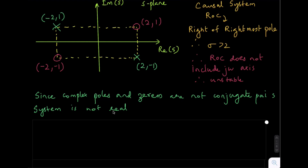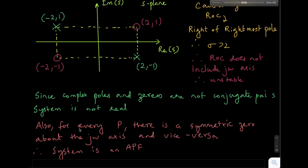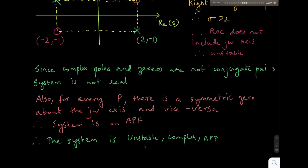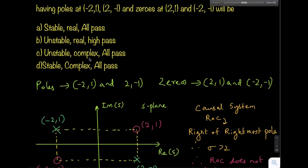For every pole there is a symmetric zero about the j-omega axis, and vice versa — for every zero there is also a symmetric pole about the j-omega axis. This is a property of an all-pass filter. Therefore this system is also an all-pass filter. The combined answer is: unstable (ROC does not include j-omega axis), complex (poles and zeros not in conjugate pairs), and all-pass filter — so option C is the correct answer.